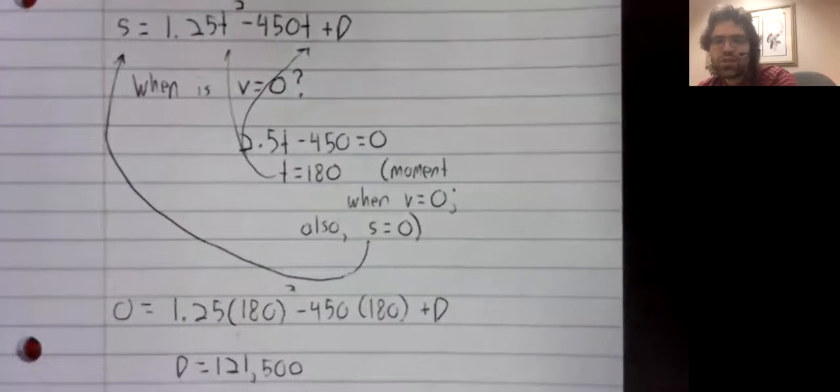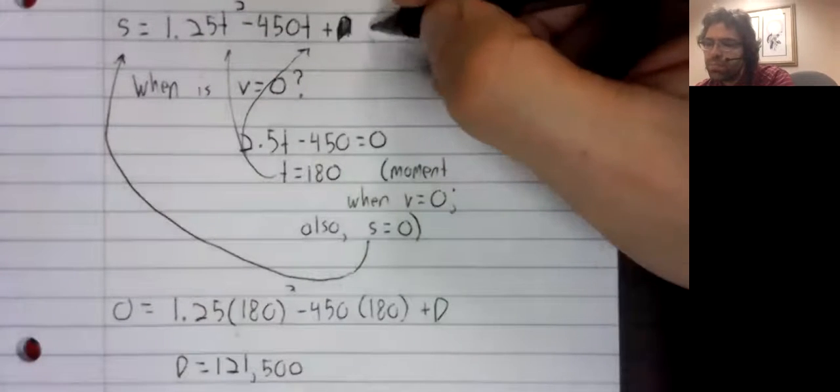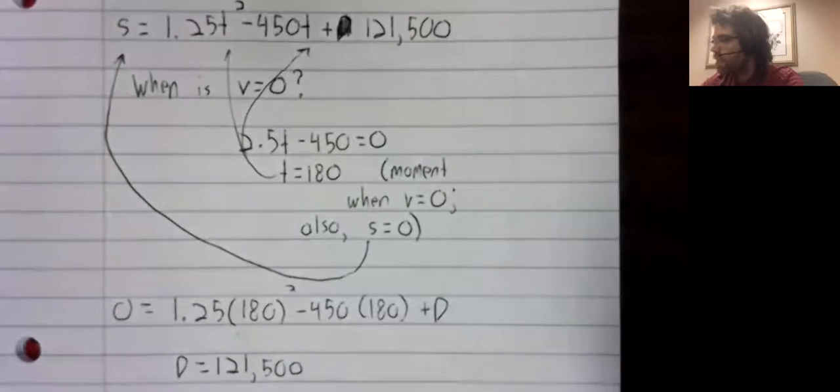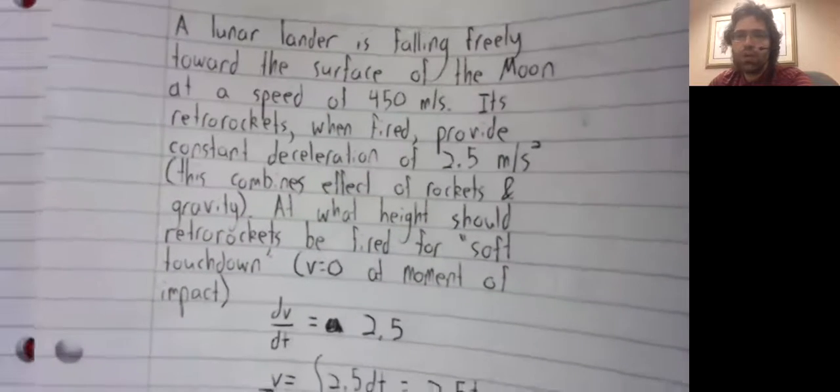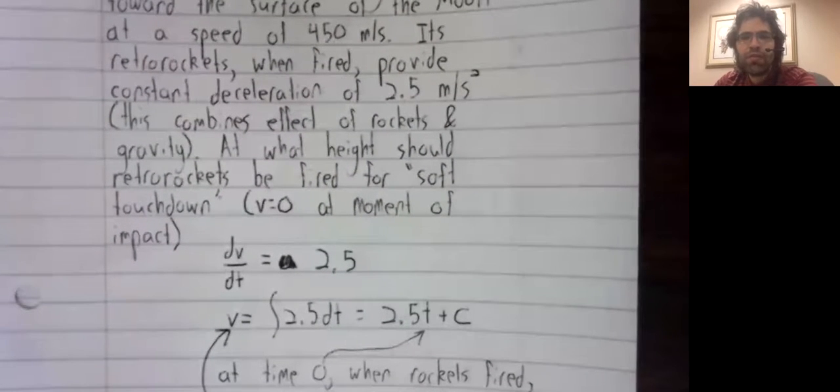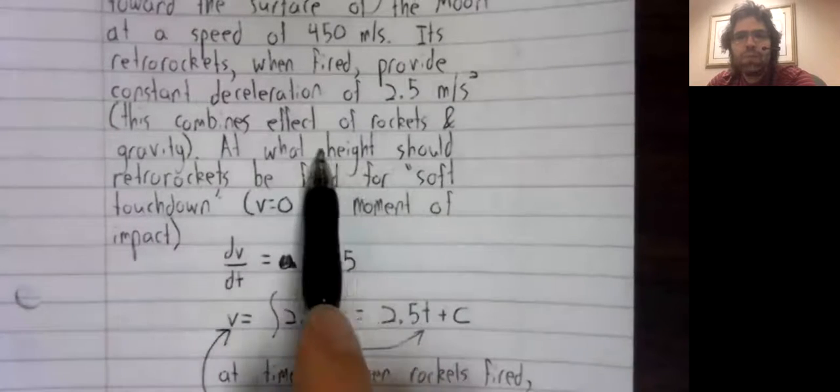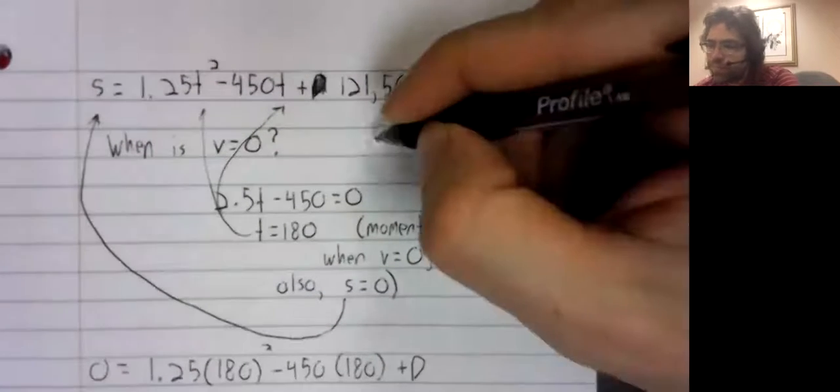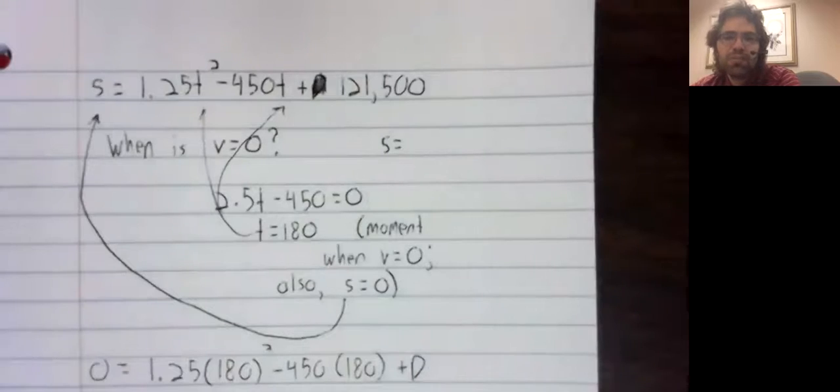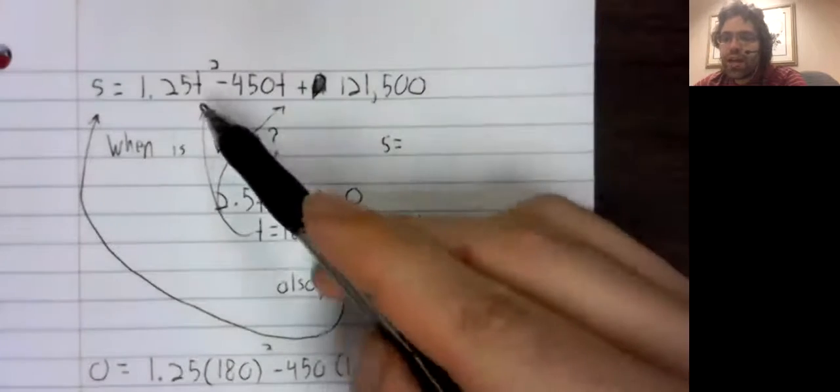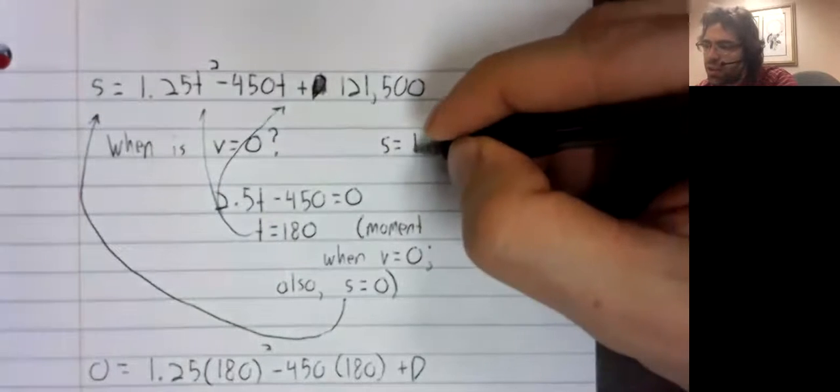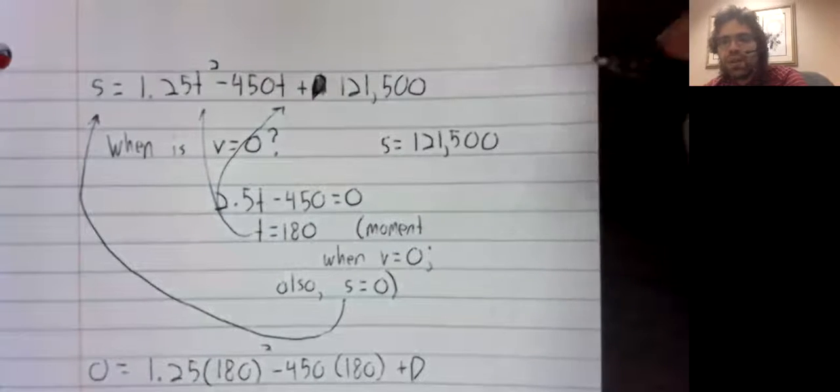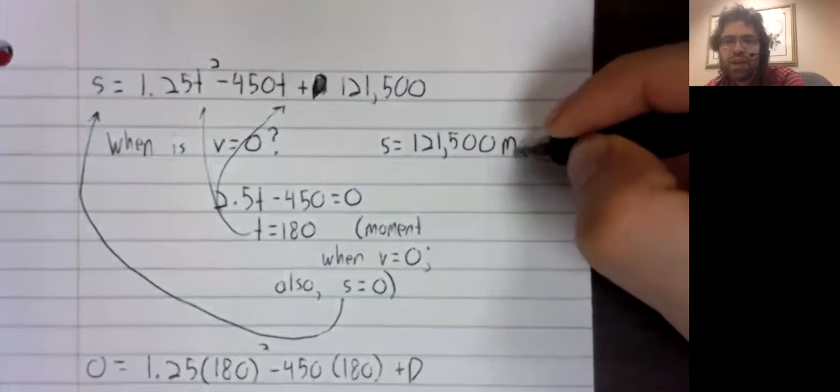So our height function is now totally known. T equals zero is the moment the retro rockets are fired. So we're being asked, what is the height when T equals zero? And that now becomes easy to find. We plug T equals zero in here. We have a height of 121,500 meters.